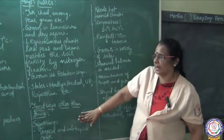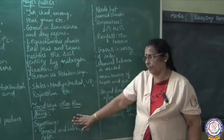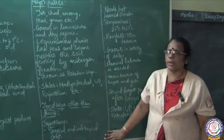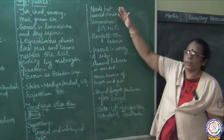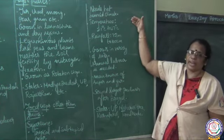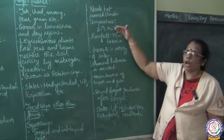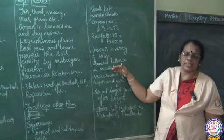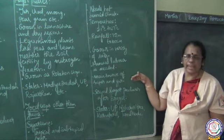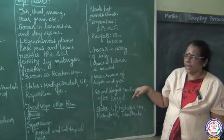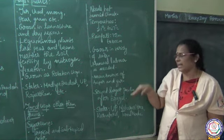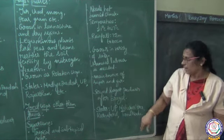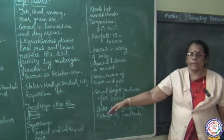To recap sugarcane: it is a tropical and subtropical crop requiring hot and humid conditions. Temperature requirement is 21 to 27 degrees Celsius and rainfall is 75 to 100 centimeters. It grows well in a variety of soils. Manual labor is greatly needed. Main products are sugar and jaggery. Brazil is the largest producer; India stands second. UP is the largest Indian producer, followed by Maharashtra, Tamil Nadu and Karnataka.